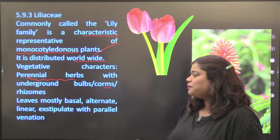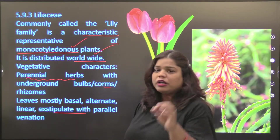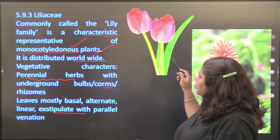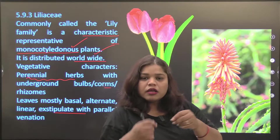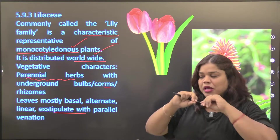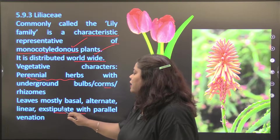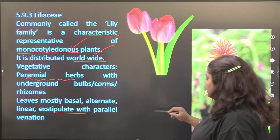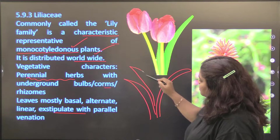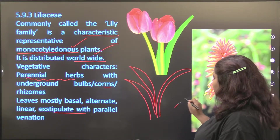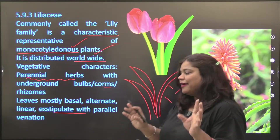Leaves are mostly basal, alternate, linear, estipulate, with parallel venation — parallel venation is confirmed with your eyes. Estipulate means no stipules. If you have seen aloe vera leaves, in aloe vera you will get little spines — a thorn-type structure, which is a modification. The leaves are generally alternate and linear.